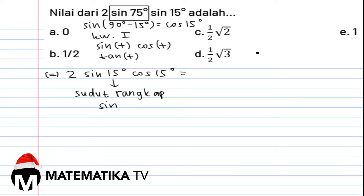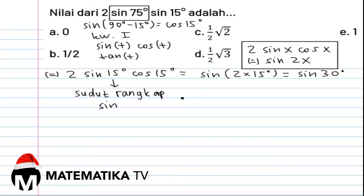Rumusnya adalah 2 sin x cos x sama dengan sin 2x. Maka 2 sin 15 derajat cos 15 derajat, sama dengan sin 2 x 15 derajat, sama dengan sin 30 derajat, sama dengan setengah.